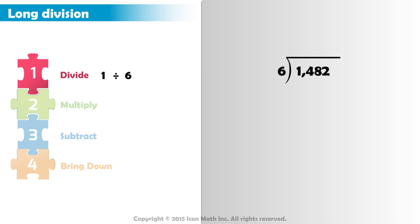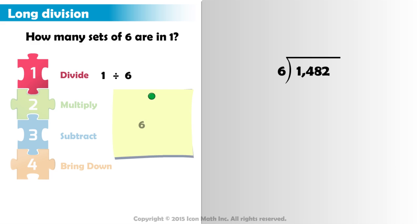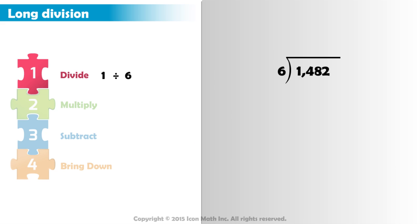We do this by asking the question: how many sets of 6 are in 1? 6 is bigger than 1, so we cannot make any set of 6 from 1. We say there are 0 sets of 6 in 1.